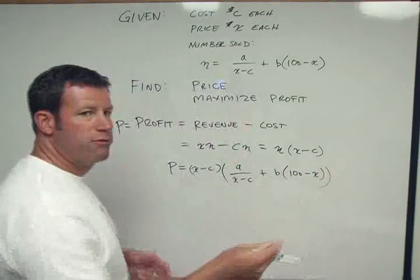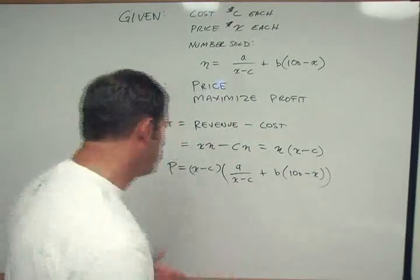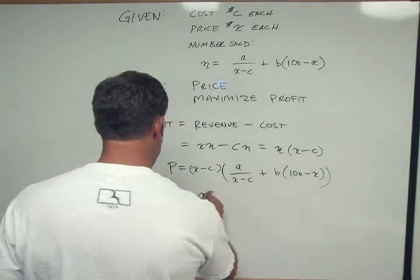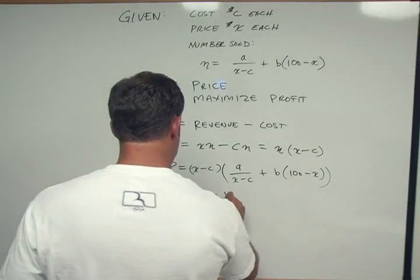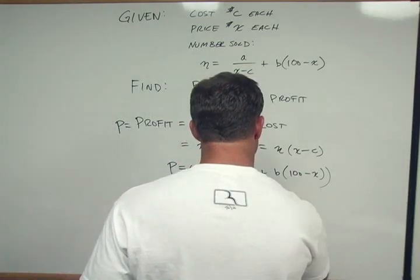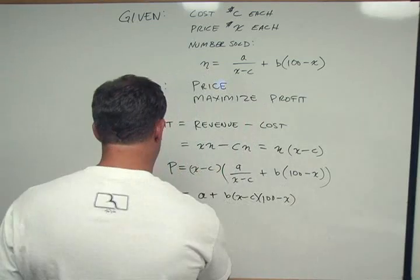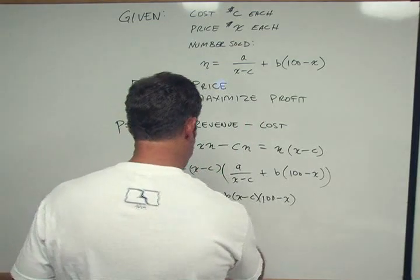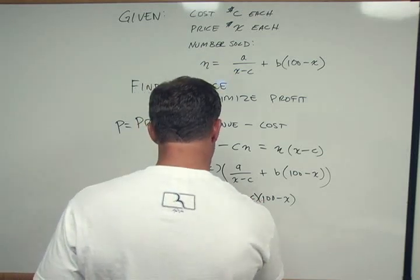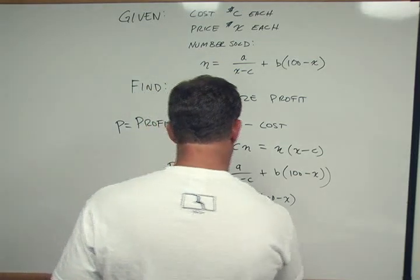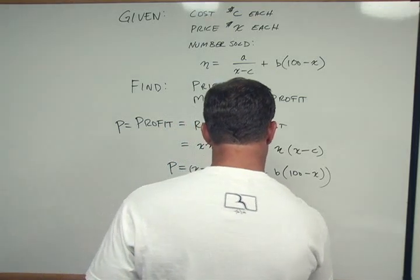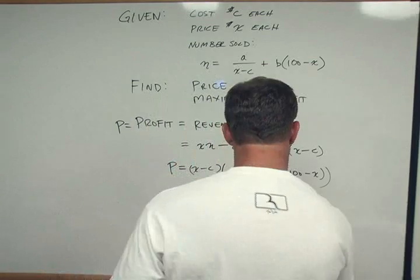And so now we can simplify it. Before we take a derivative, let's simplify it. These here cancel. So we're left with A plus B times X minus C times 100 minus X. So we have 100X minus 100C minus X squared plus XC.